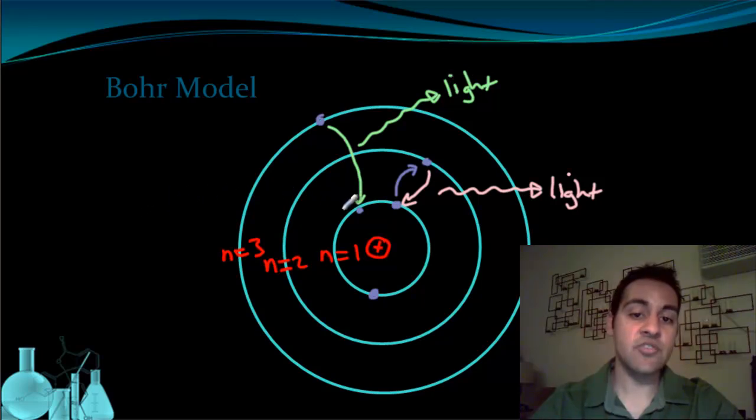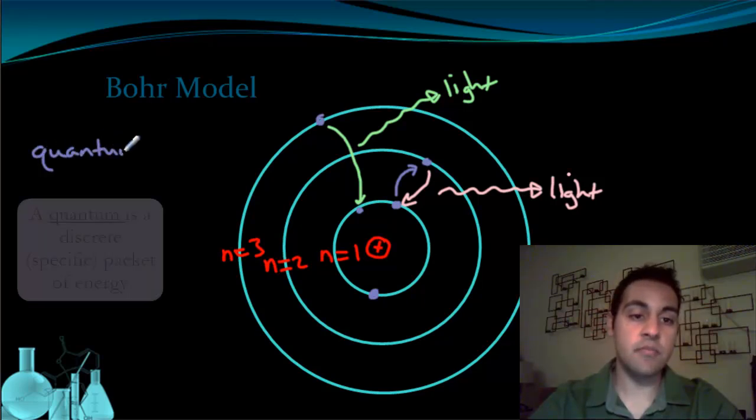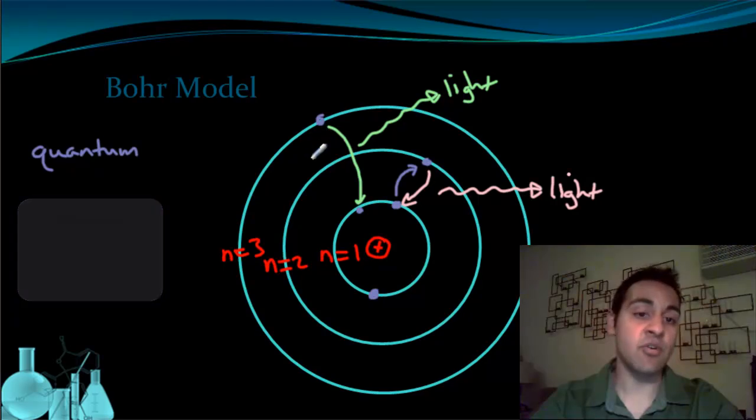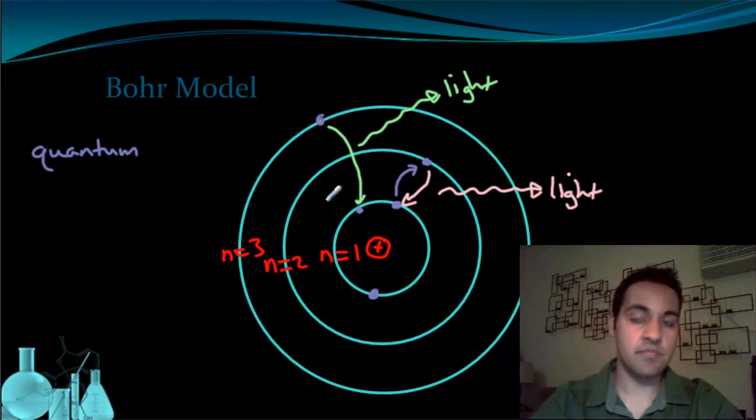So what does an electron need to be excited in the first place? It needs a specific amount of energy that's called a quantum. A quantum is an amount of energy. So an electron needs this amount of energy, or a quantum, a specified amount of energy to be excited to a higher orbit in Bohr's model.